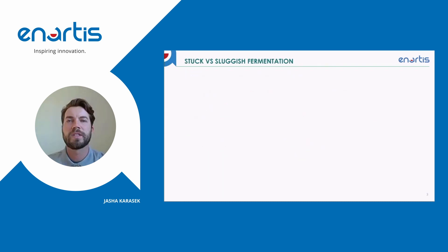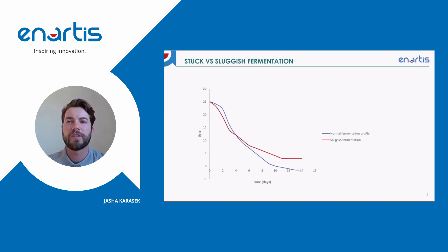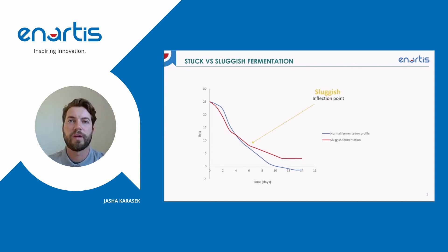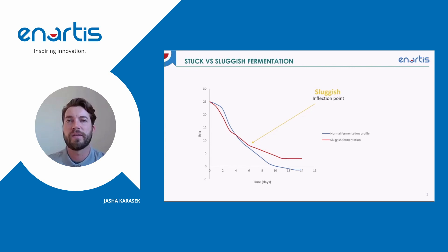So what's the difference between a stuck and a sluggish fermentation? In a normal fermentation curve, shown in the blue line, we have a lag phase, a steep decrease in the rate of fermentation, and then eventually slowing and becoming completely dry. In a sluggish fermentation we have an abnormal situation where there's an inflection point and the rate of fermentation becomes abnormally slow.